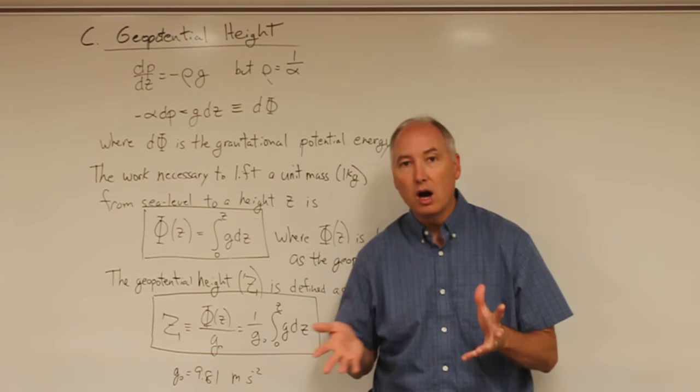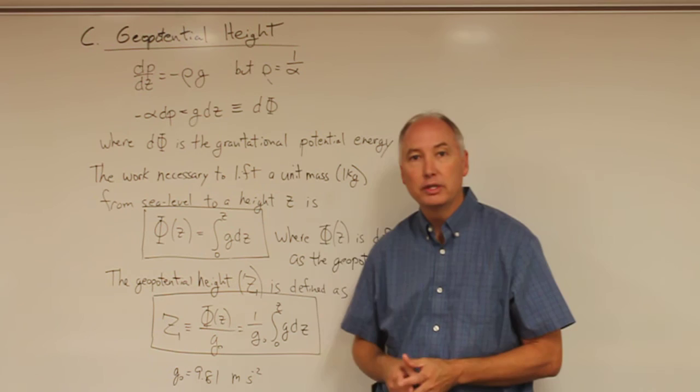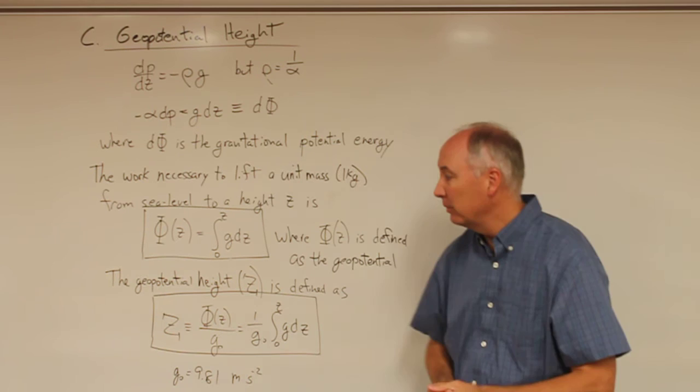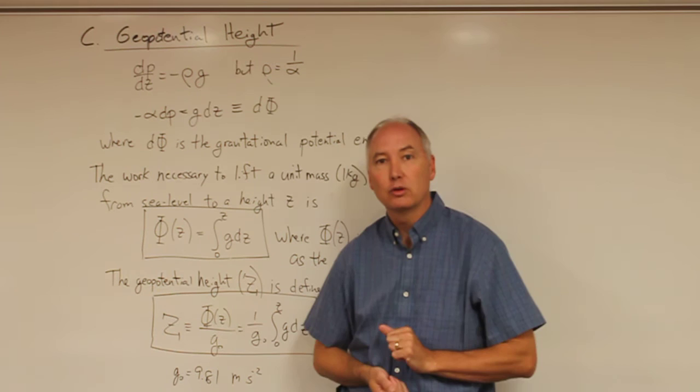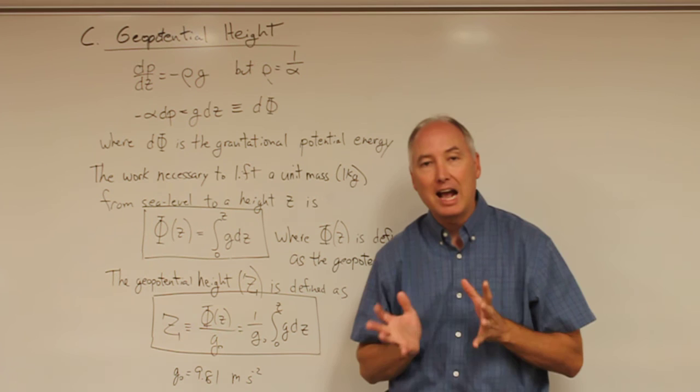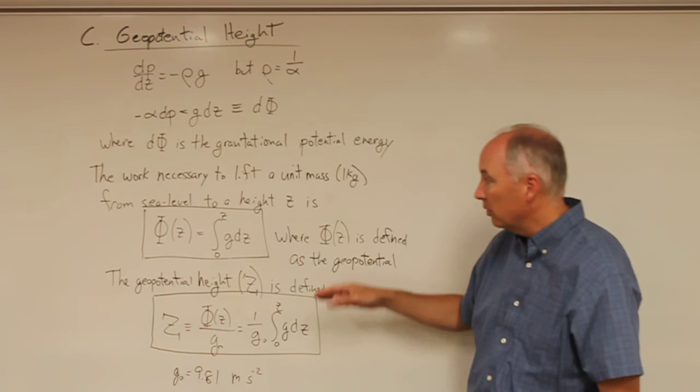From now on, when we talk about height in the atmosphere, I'm no longer referring to the actual height of an air parcel above the surface. I'm always referring to the geopotential height, because we've redefined the vertical axis so that for an air parcel moving upward or downward, we can have an accurate accounting of the gravitational potential energy.